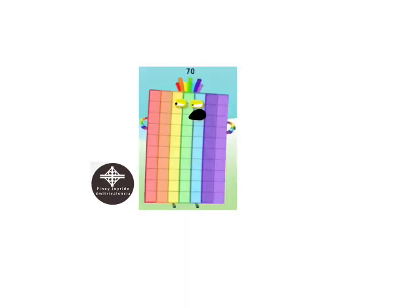Oh my God. Dimitri Valencia, how dare you ground number blocks 14, 15, and 16? That's it. You are grounded for 700 months. Go to bed now.